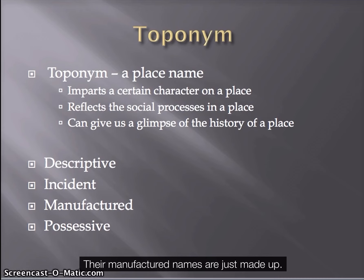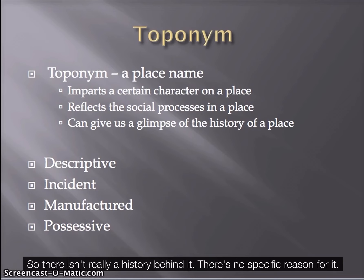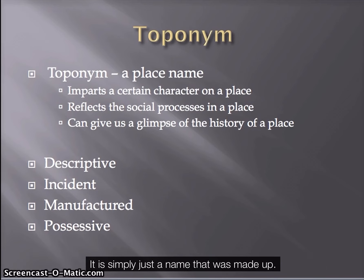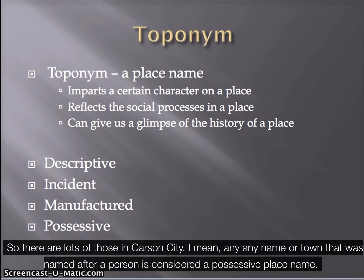Manufactured names are simply made up — sometimes we try to attribute grand meaning to things when in reality it was just a name someone thought sounded nice, with no specific history behind it. An example is Zzyzx in California — a classic example of a manufactured name. A possessive name is one named after a person, like Carson City. Any town named after a person is considered a possessive place name.